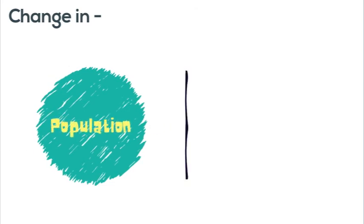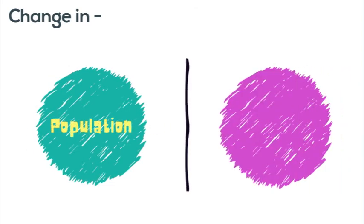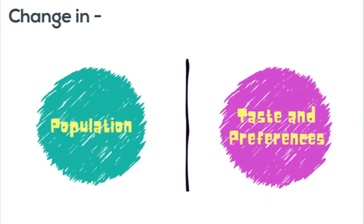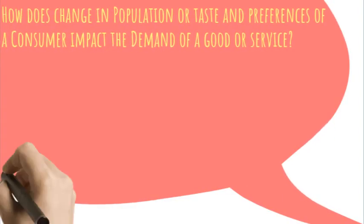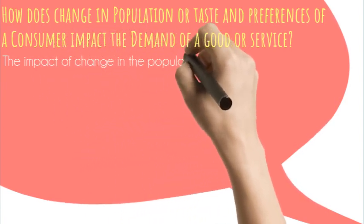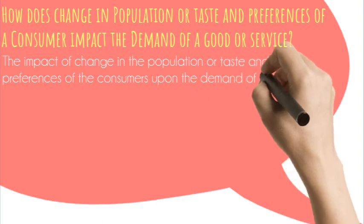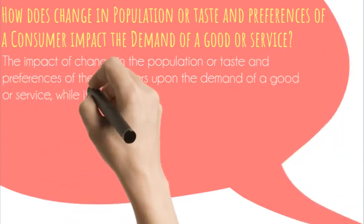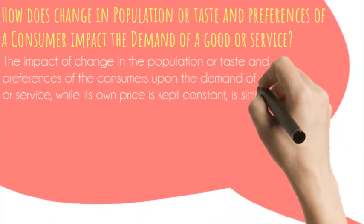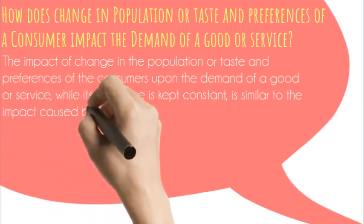Now, let's understand the impact of a change in the population of a market, or a change in the taste and preferences of the consumers, upon the demand of a good or service, while there is no change in the price of the good or service itself. The impact of a change in the population or taste and preferences of the consumers upon the demand of a good or service, while its own price is kept constant, is similar to the change caused by the change in income of the consumers.